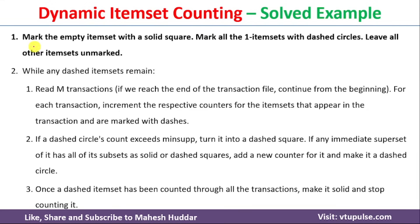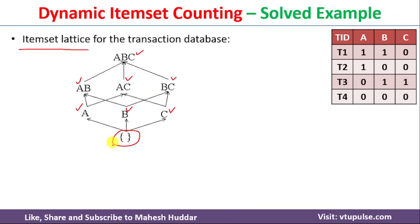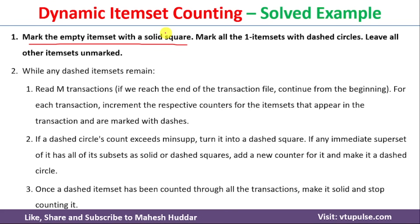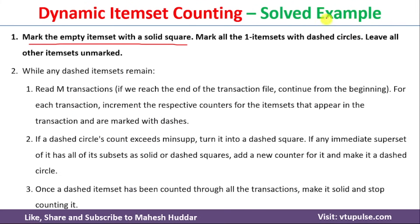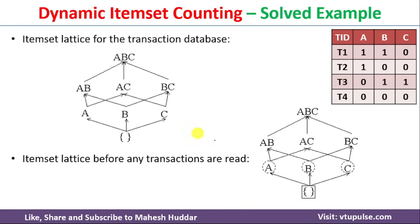The first step of the algorithm is to mark the empty item set with a solid square, meaning it is a frequent item set. Then mark all one-item sets — A, B, and C — with dashed circles. All other item sets are left unmarked. So the empty set gets a solid square, and A, B, C each get a dashed circle.